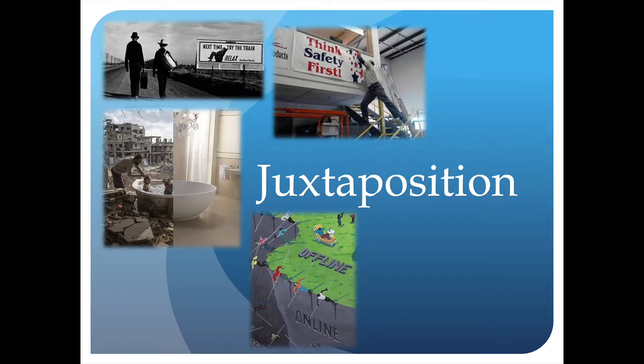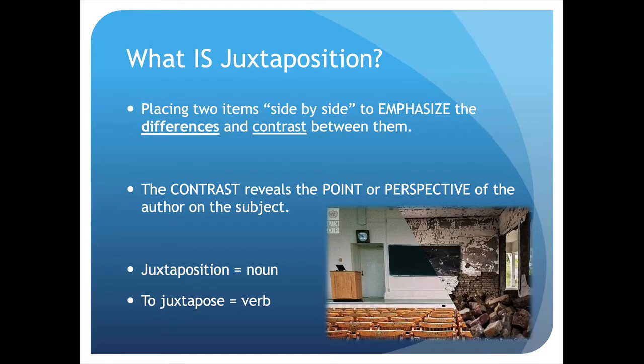Hello, and welcome to our podcast on the literary term of juxtaposition. Juxtaposition is the placing of two items side by side to emphasize the differences and the contrast between these two. That contrast is what reveals the point or perspective of the author. We have to first observe that two items are being contrasted right next to each other at the same time — that's the idea of juxtaposing these two items.